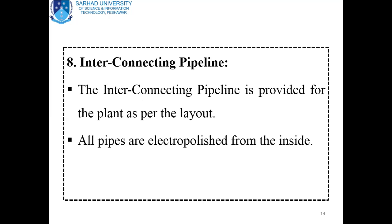Interconnected pipelines are also provided for the plant as per the layout. The different parts — the water phase vessel, wax phase vessel, manufacturing vessel, and storage vessel — are interconnected with pipelines in order to provide safe and easy transfer from one vessel to another vessel, and from the storage container to the filling line as well. The interconnected pipelines are designed and provided as per the layout of the plant. All pipes are electropolished from the inside.